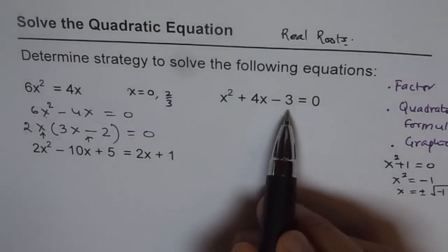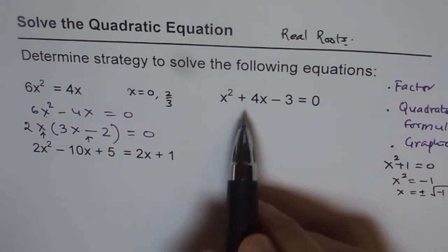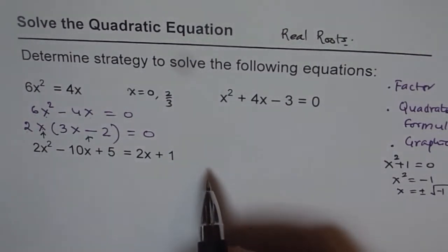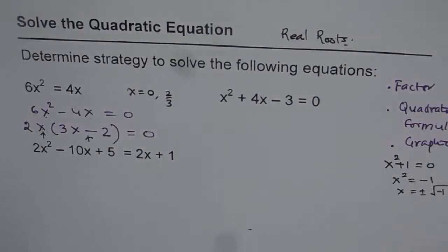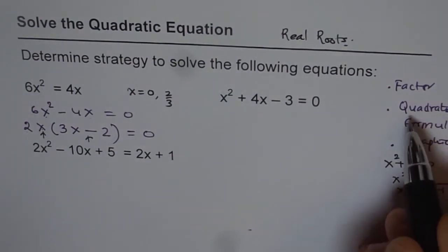We are trying to find a product which is minus 3 and sum as plus 4. So we don't have any combination. Since we don't have any combination, the only option left is use quadratic formula.